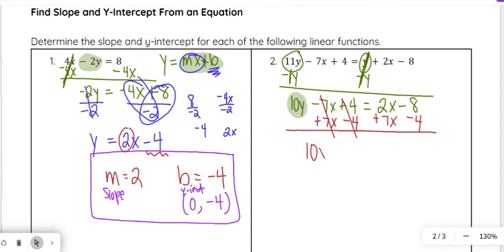I'm going to subtract 4 from both sides as well. Both of those terms cancel out on the left side, so we just have 10y on the left side equals, and then we'll have 2x + 7x, which is 9x. Those are like terms, so we can combine them. And -8 - 4 is -12.